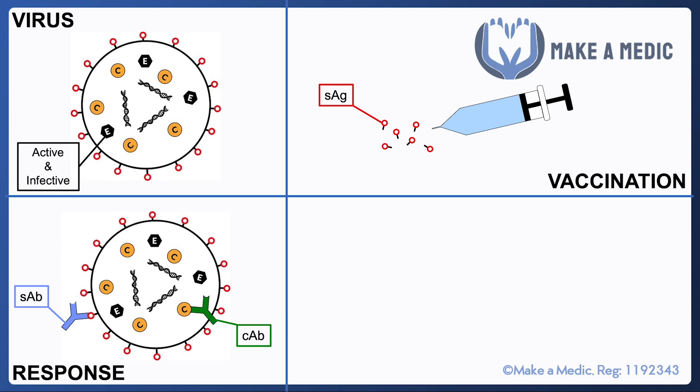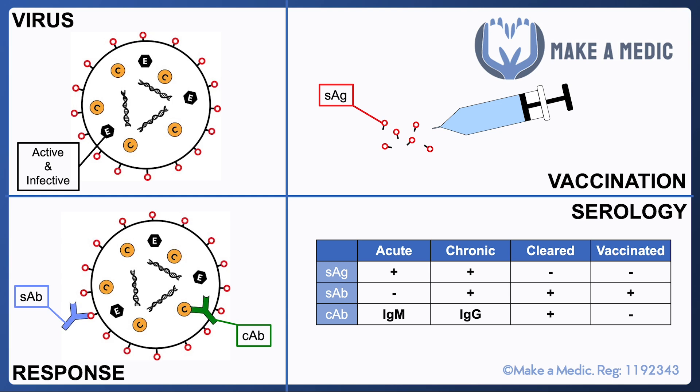Starting from the right-hand side of this table: if someone has been vaccinated, they've only been exposed to surface antigen. It has no capacity to reproduce, so it won't be present a year after the vaccine, but it will stimulate the generation of surface antibodies — this is why vaccinated patients are only positive for surface antibody. If someone was infected with hepatitis B but cleared it, there's no longer any surface antigen remaining, but they will have antibodies against surface antigen and core antigen, so they are positive for both surface antibody and core antibody.